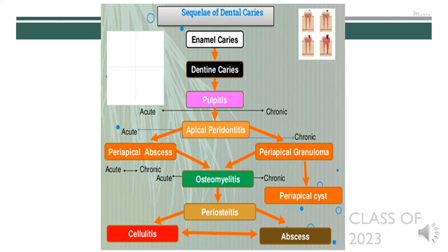To map the sequelae of dental caries, remember that caries always begins with the enamel, then progresses to the dentine, following which the caries or its byproducts will affect the pulp. This results in an inflammatory process in the pulp tissue known as pulpitis. The inflammation may be rapid or slow in nature, and based on this, pulpitis can be subclassified as acute pulpitis or chronic pulpitis. If pulpitis is left untreated, the inflammatory process can progress into the periapical areas through the apical foramen or accessory canals into the bone outside the root, resulting in what we call apical periodontitis.